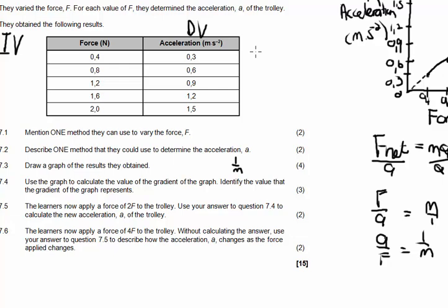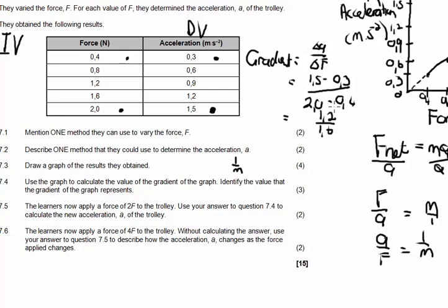Let's quickly go and use some of these values. Gradient equals changing y over changing x, which is changing a over changing f. I'm going to use two points. I'm going to use 1.5 minus 0.3, so I've taken this one and this one. And then I'm going to divide that by 2.0 minus 0.4. I'm taking the same values in the same row as what I've done for acceleration. 1.5 minus 0.3 gives me 1.2, and 2 minus 0.4 gives me 1.6. So if you use your calculator, 1.2 divided by 1.6 gives you 3 over 4, or 0.75, which is equal to 1 over m.